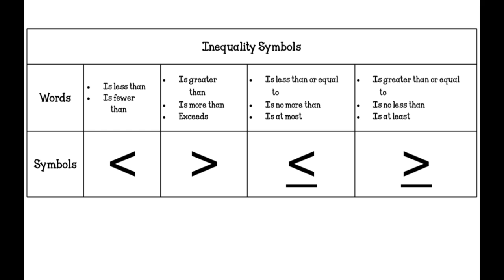The first symbol is less than. Keywords that signal less than in a word problem are 'is less than' or 'is fewer than.' Words that indicate the greater than symbol include 'is greater than,' 'is more than,' or 'exceeds.'